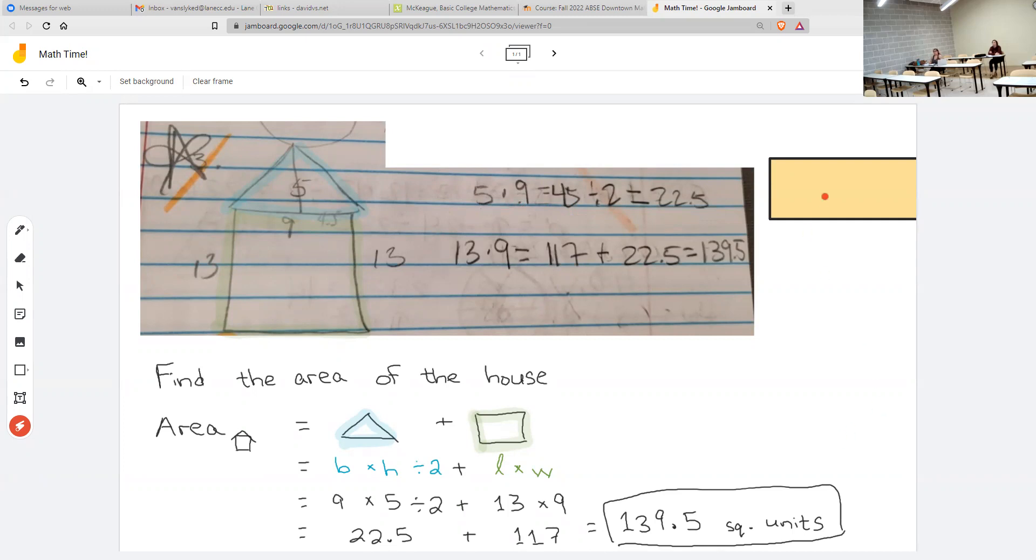So officially the way we should do this is to write more than one line. Start out by doing the five times nine equals 45. And then you could write 45 divided by two, or then divided by two.